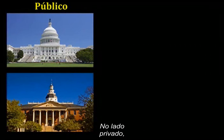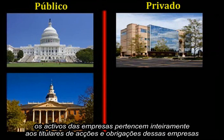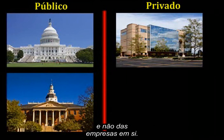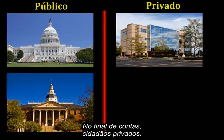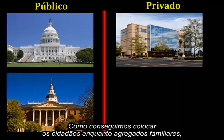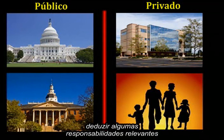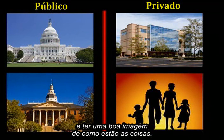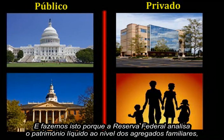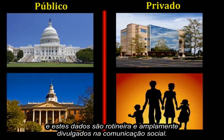On the private side, the assets of companies belong entirely to the bondholders and shareholders of that company, not the company itself — and ultimately, those are private citizens. Since we can pool citizens into households, we could examine household assets, deduct some relevant liabilities, and get a decent view of where things stand. The Federal Reserve happens to track net worth at the household level, and this data is routinely and widely reported in the media.